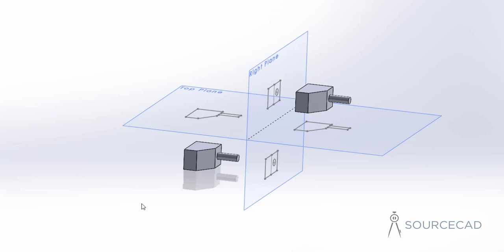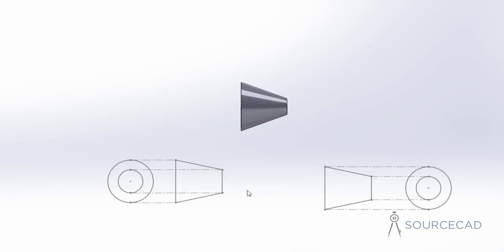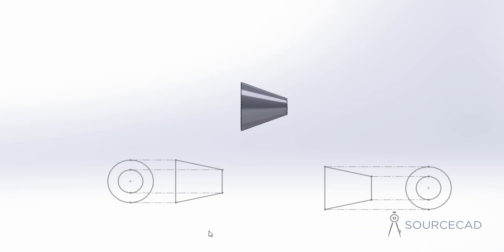How about the symbols we use for these projection systems and what do they mean? In this drawing, the symbol on the left side is for first angle of projection, and the symbol on the right side is for third angle of projection. In the real world, you'll only see two circles, a tapered cylinder, and a center line. This symbol uses the same rule of first and third angle of projection, using a tapered cylinder as an example.